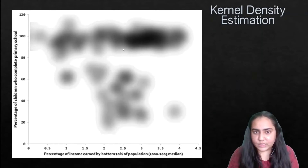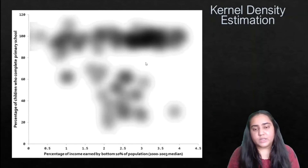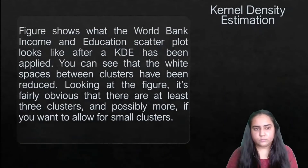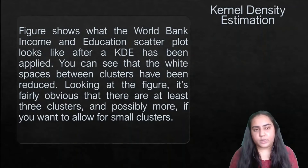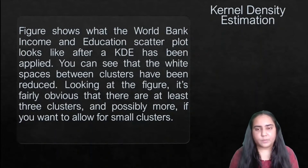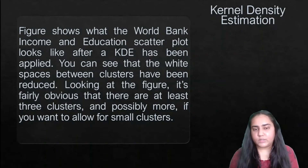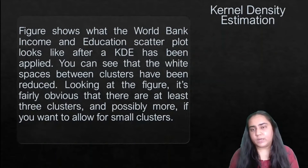For example, this area is very dark black, which means there are a lot of kernels — a lot of data points together — making it a dense kernel. This figure shows what the World Bank income and education scatter plot looks like after KDE has been applied. You can see that the white spaces between clusters have been reduced considerably. Looking at the figure, it's fairly obvious that there are at least three clusters, and possibly more if you allow for small clusters.